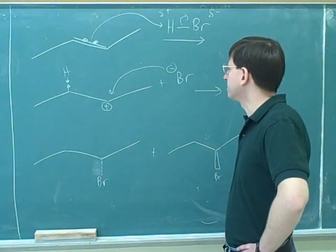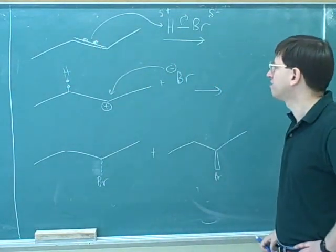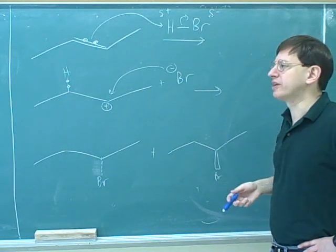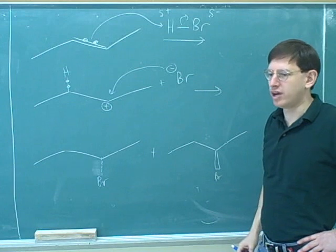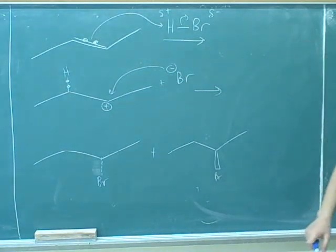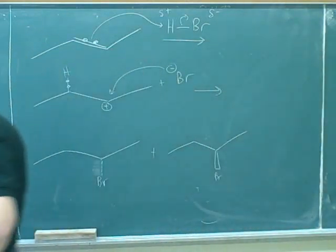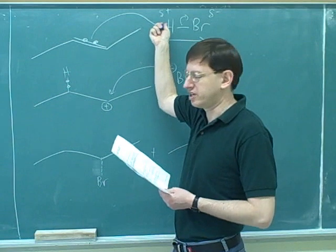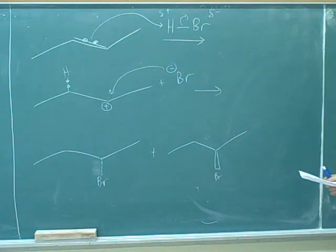That gives us an electrophilic addition, and the carbon-carbon pi bond can act as a nucleophile. This is not hydrogenation because we're not adding two hydrogens — a good name for this would be hydrohalogenation. This is the reaction on page one of the alkenes handout, which starts with electrophilic additions that are initiated by protonation, and the first one is hydrohalogenation.